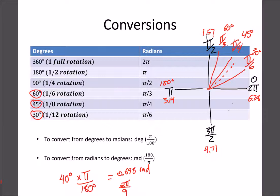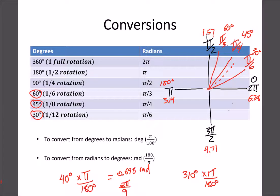Another example: 310 degrees times π/180 — divide 310 by 180 to get 31/18 as a fraction, which doesn't simplify further, so we write it as 31π/18. As a decimal, multiply by π to get approximately 5.41 radians. Either form works fine.